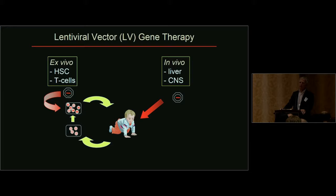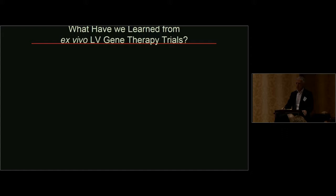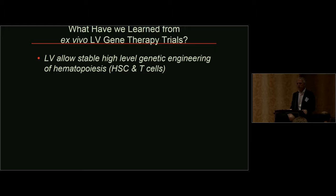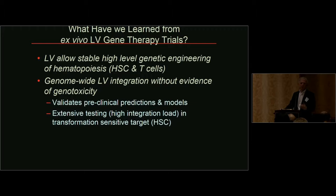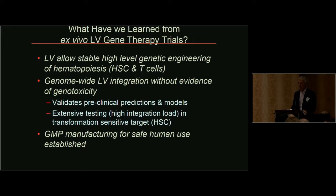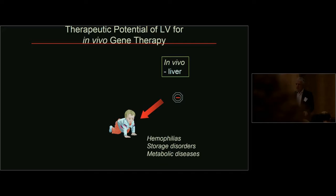We are talking about lentiviral vectors, which have been extensively tested in ex vivo gene therapy using hematopoietic stem cells and T cells, but there is also opportunity for in vivo application of these platforms. What we have learned from ex vivo gene therapy with lentiviral vectors from clinical use is that they allow stable engineering of hematopoietic lineages — entirely hematopoiesis if stem cells are used — and despite semi-random genome-wide integration, there is little evidence of substantial genotoxicity, validating improved safety as compared to early generation vectors. GMP manufacturing has also been established for supporting clinical trials.